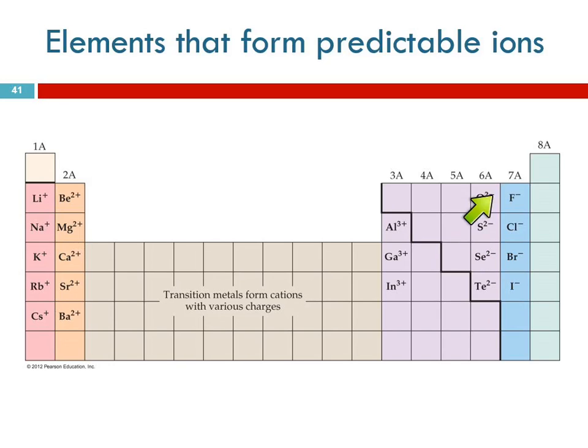The next group over, oxygen, sulfur, selenium, and tellurium they have six valence electrons. If they gain two electrons then they have eight which is the number of valence electrons the noble gases have. So they're trying to get eight.